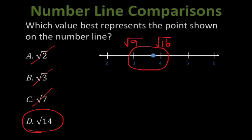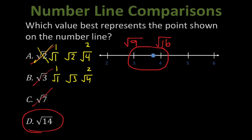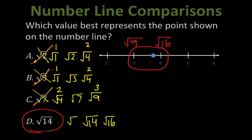Another approach would be to evaluate each option: square root of 2 is between 1 and 2 — eliminated. Square root of 3 is between square root of 1 and square root of 4, so between 1 and 2 on the number line — eliminated. Square root of 7 is between square root of 4 and square root of 9, so between 2 and 3 — not my number. Square root of 14 is between square root of 9 and square root of 16, so between 3 and 4 — that's my point. It's a lot more work, so it's probably not the most efficient method, but it works.